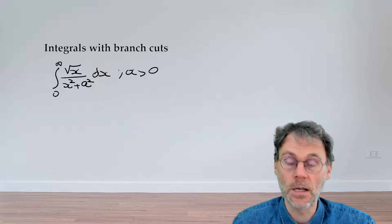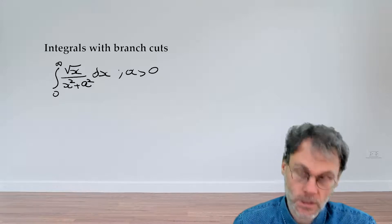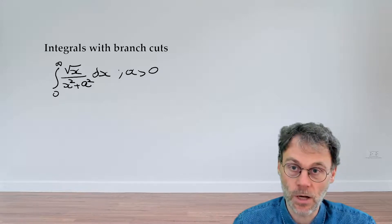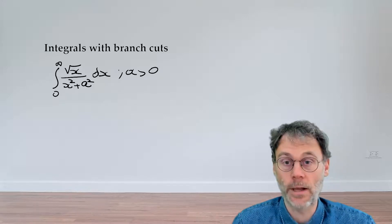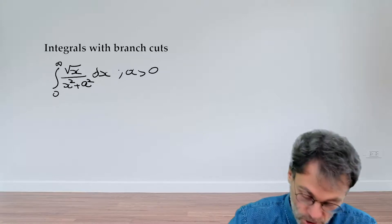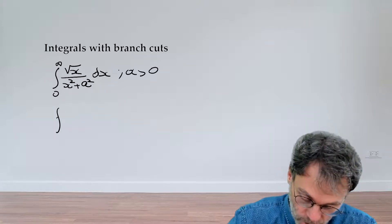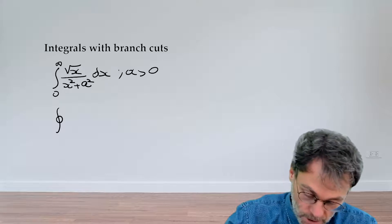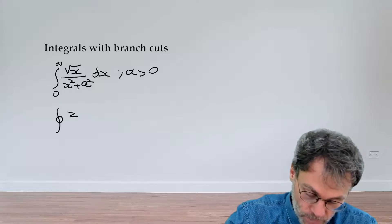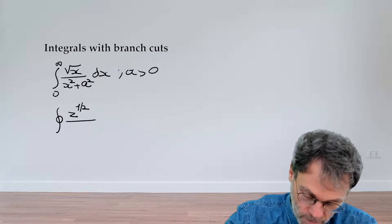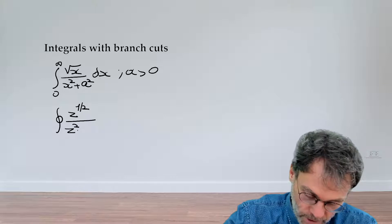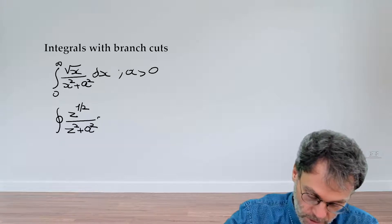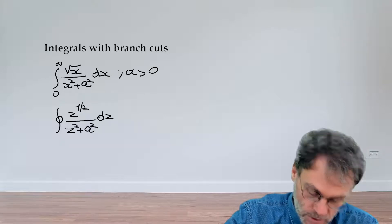There are two ingredients to solving this problem. The first is figuring out what complex function f(z) should be when we calculate the contour integral. In this case, it's pretty straightforward: we're going to use z to the power of 1/2 divided by z squared plus a squared.